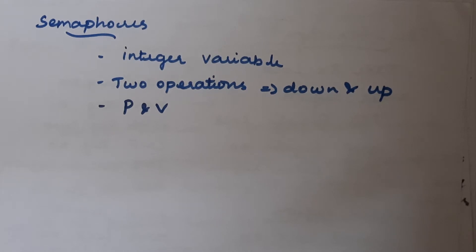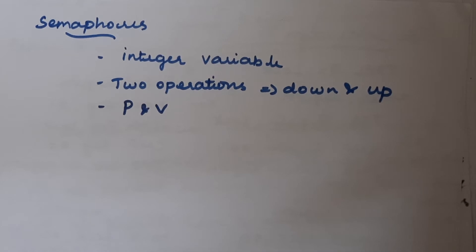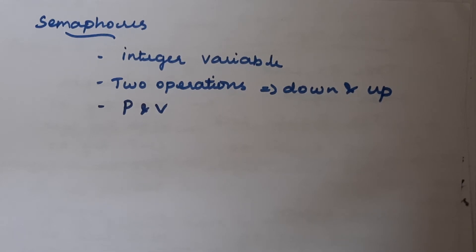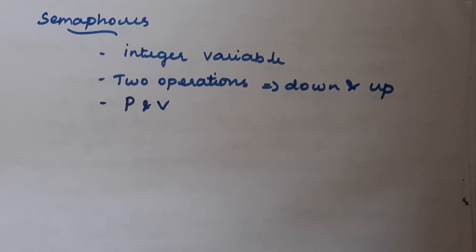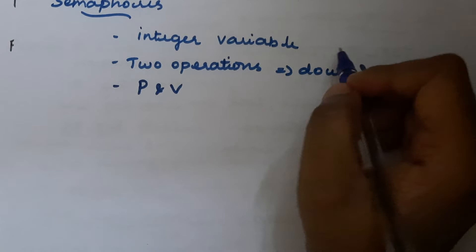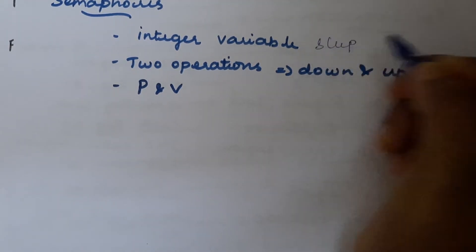A semaphore is nothing but an integer variable. This variable will either be incremented or decremented by a set of operations called sleep and wake up. With the help of this variable we can avoid the race condition for any two processes accessing common data. The semaphore consists of two operations: down and up, which are equivalent to sleep and wake up respectively.